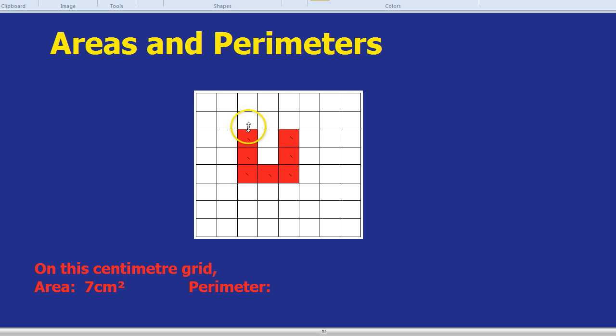There is one side. And let's use it with a brush. So let's count. 1, 2, 3, 4, 5, 6, 7, 8, 9, 10, 11, 12, 13, 14, 15, 16. So the perimeter of this shape is 16 centimetres.